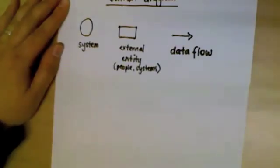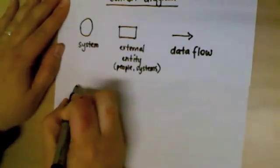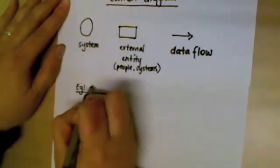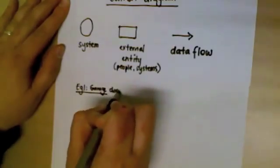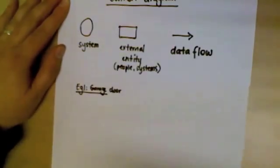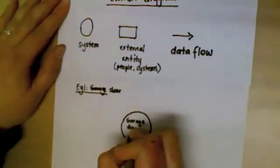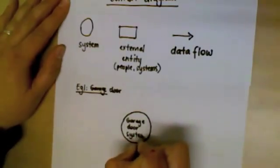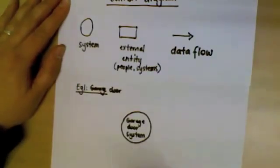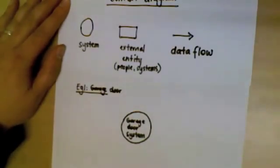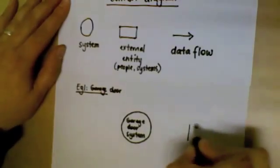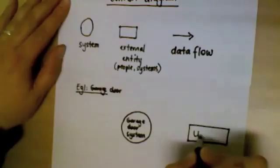Let's do an example — think about the garage door system. Whenever we're drawing a context diagram we should always start by drawing our large circle using the name of the item, and then always put the word 'system' at the end. The garage door system is the roller shutter that goes up and down, controlled by a remote. The only person who interacts with the garage door system would be the user, so we put the user in an external entity box.